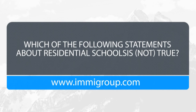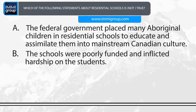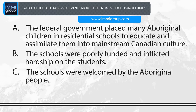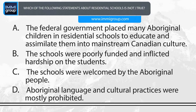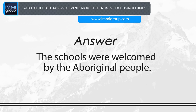Which of the following statements about residential schools is not true? A. The federal government placed many Aboriginal children in residential schools to educate and assimilate them into mainstream Canadian culture. B. The schools were poorly funded and inflicted hardship on the students. C. The schools were welcomed by the Aboriginal people. D. Aboriginal language and cultural practices were mostly prohibited. Answer: The schools were welcomed by the Aboriginal people.